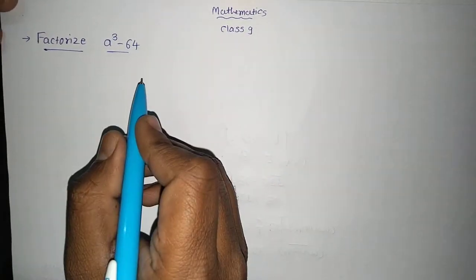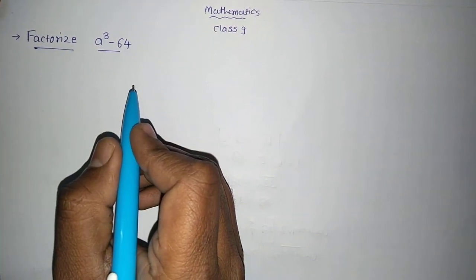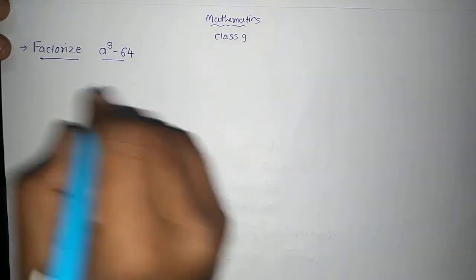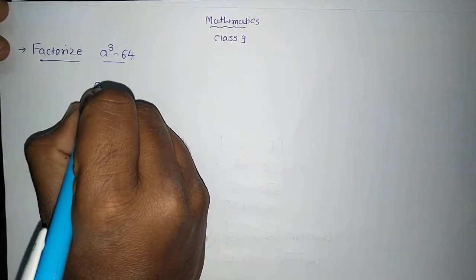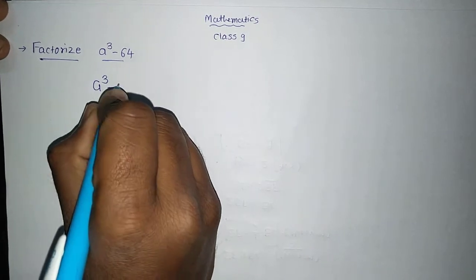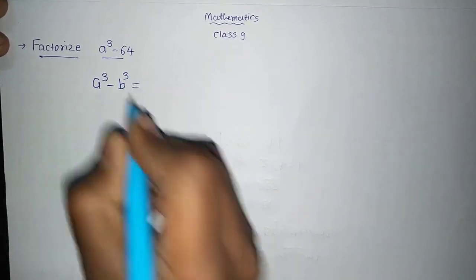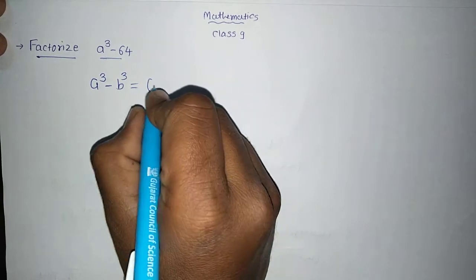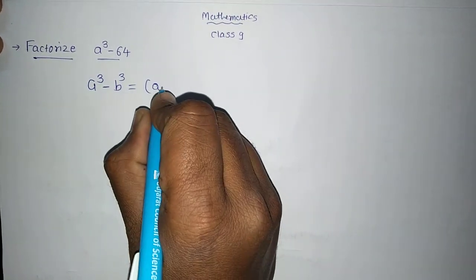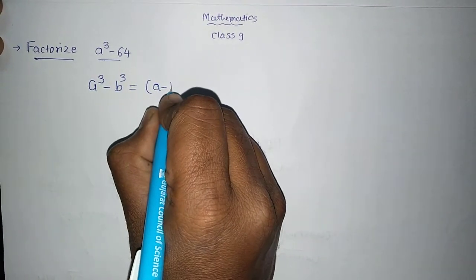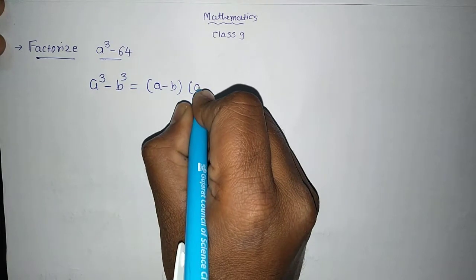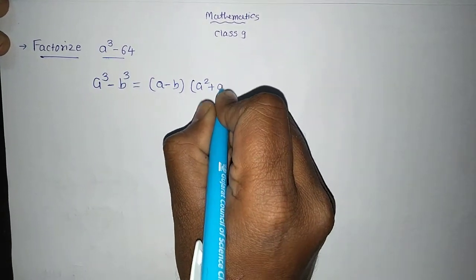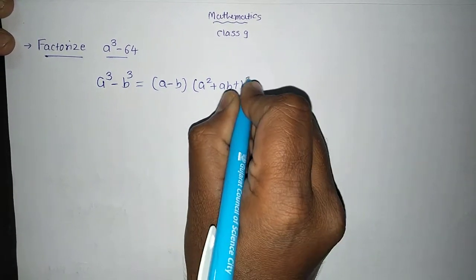Now here we have to use the formula for the factorization, that is the cube formula. We should use this formula: a cube minus b cube is equal to a minus b, into the other bracket, it is a square plus a b plus b square.